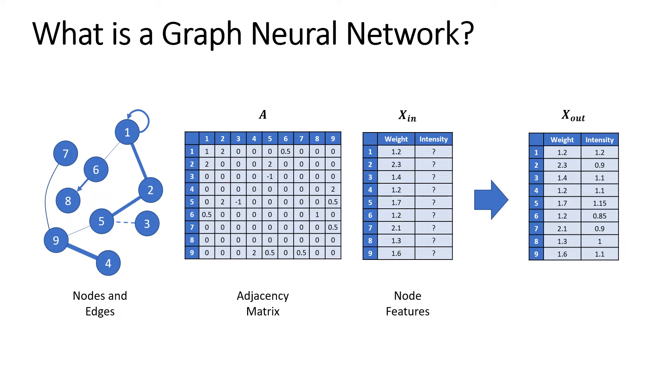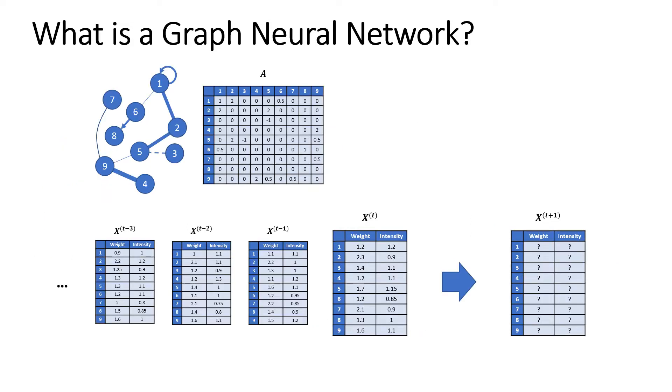A typical problem that we would be concerned with is using some known input information to predict some unknown node features. In the case of a spatial temporal graph, we are also given node features from previous time steps and typically asked to predict node features at future time steps given this information.